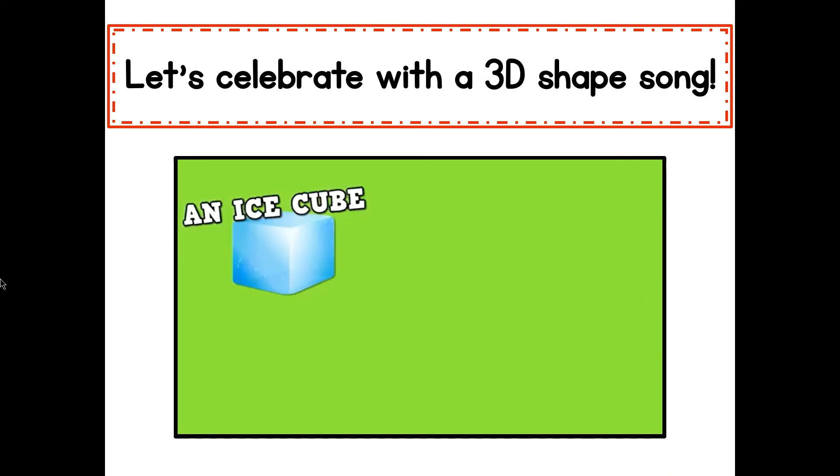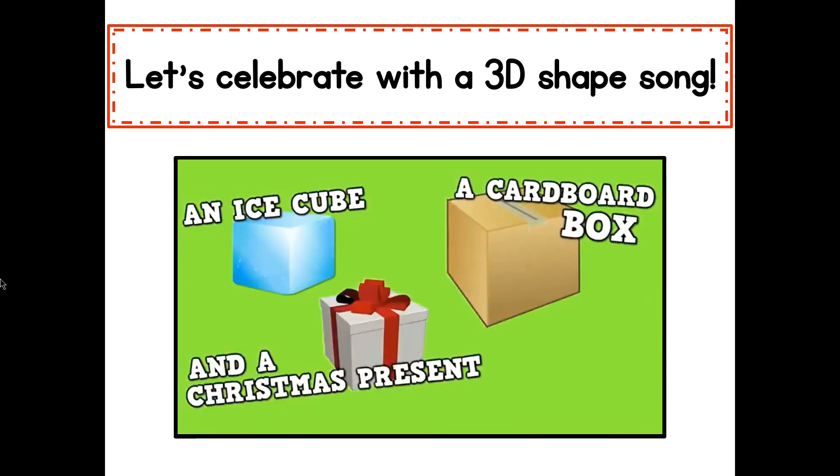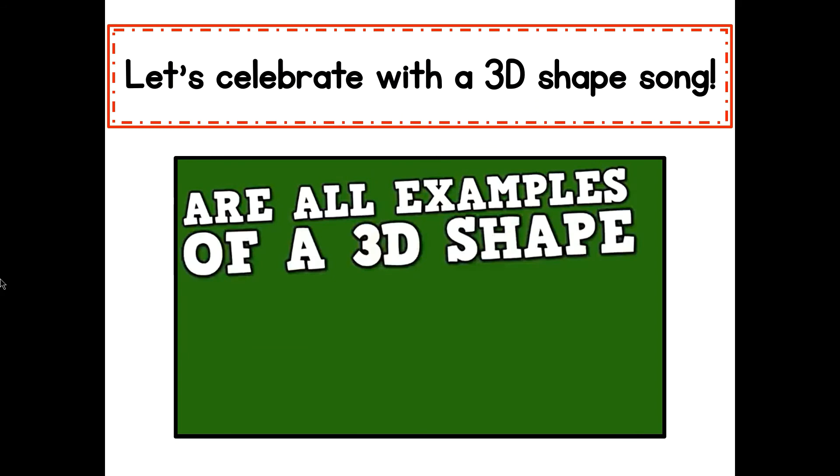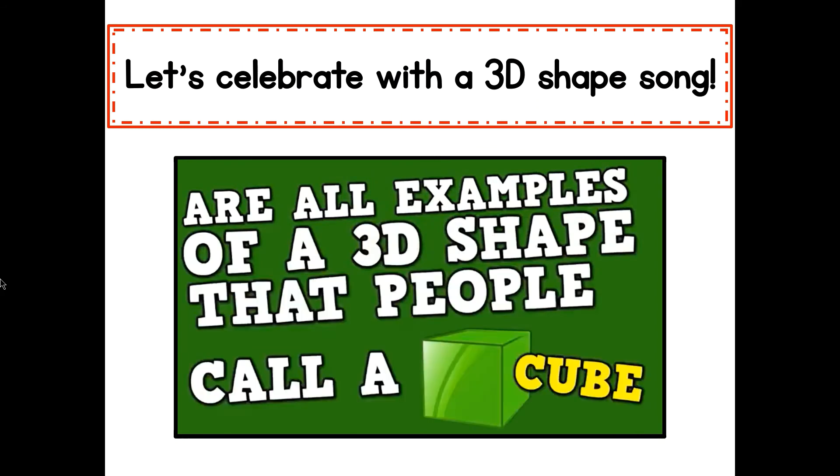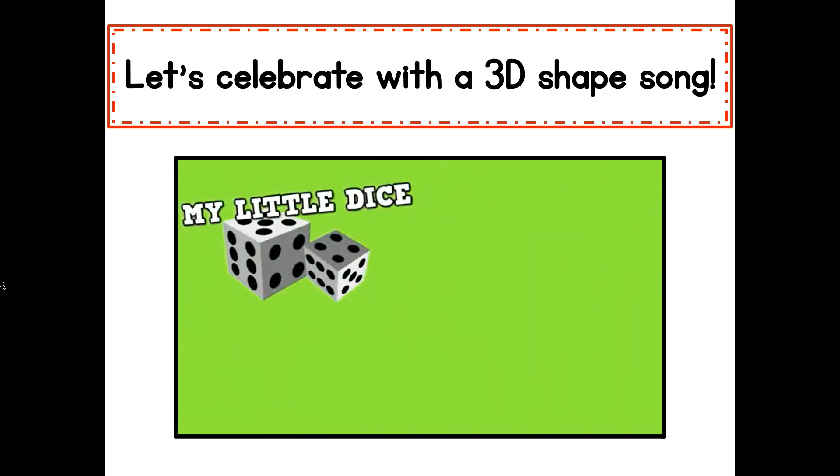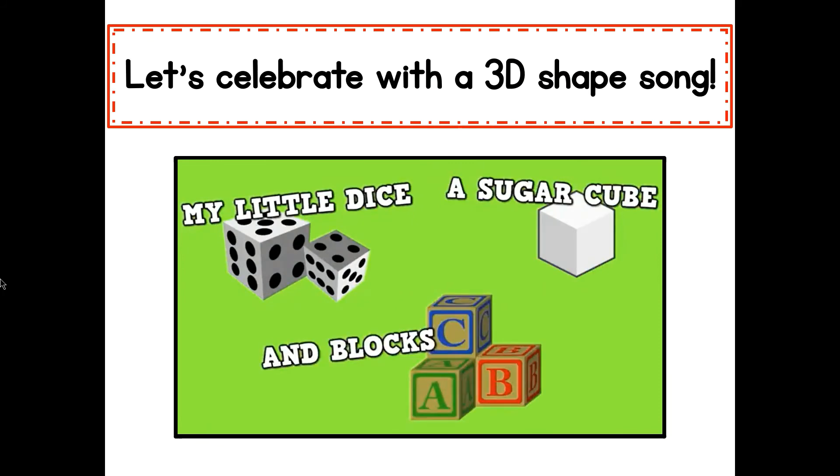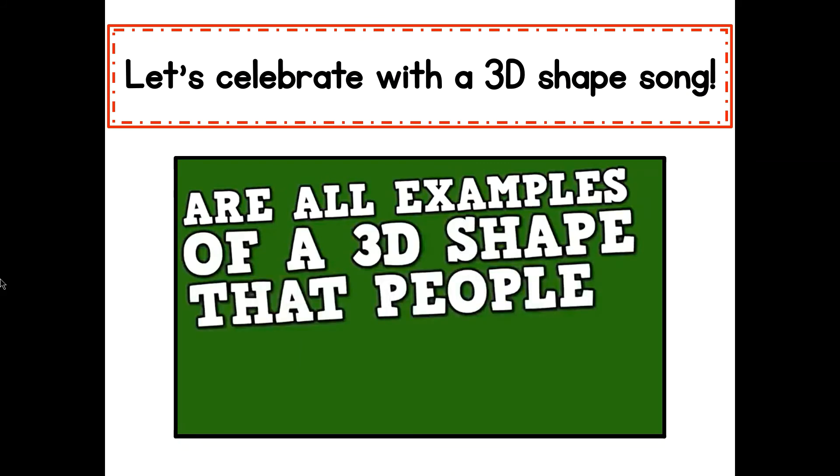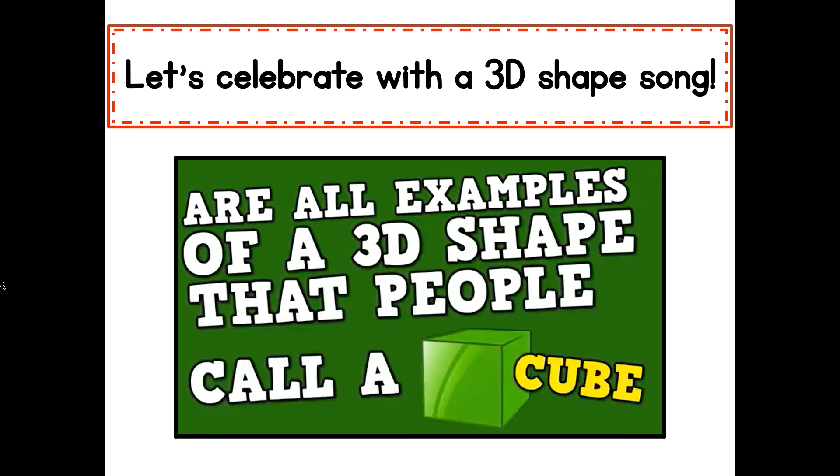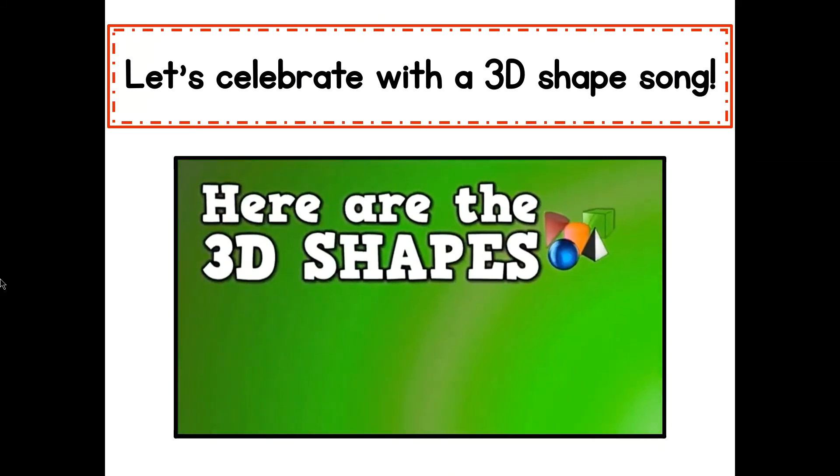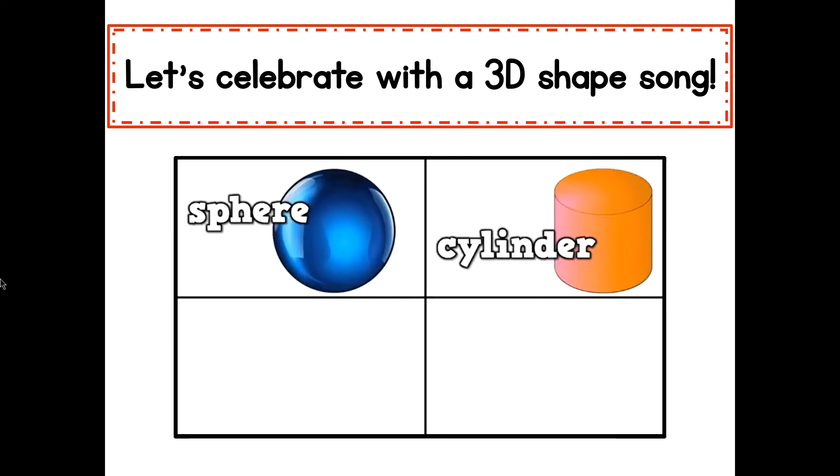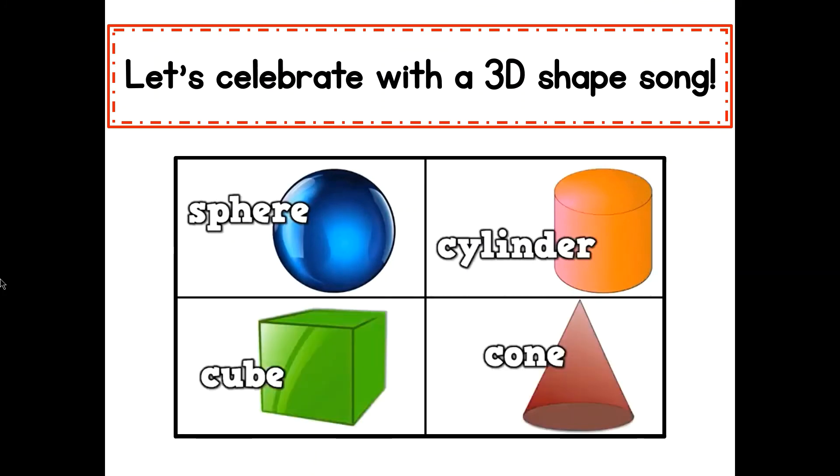Here are the 3D shapes that I know. A sphere, a cylinder, a cube, and a cone. An ice cube, a cardboard box, and a Christmas present for you are all examples of a 3D shape that people call a cube. My little dice, a sugar cube, and blocks that I use are all examples of a 3D shape that people call a cube.